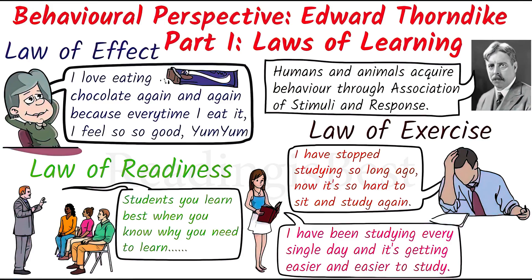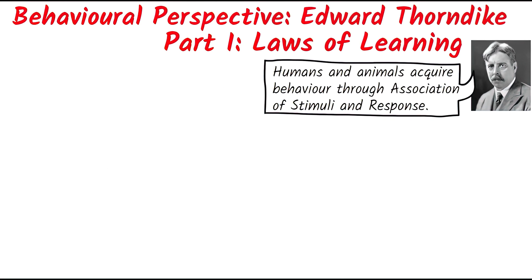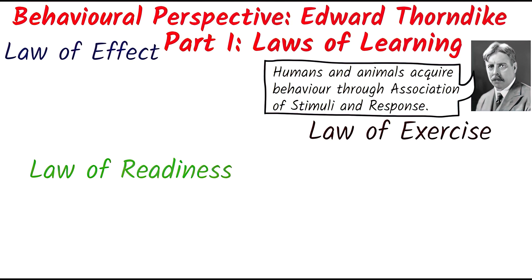Welcome to Reading is Best channel. In this video I am going to talk about Edward Thorndike and his three major laws of learning. Edward Thorndike initially proposed that humans and animals acquire behaviors through the association of stimuli and responses. He advanced his laws of learning to explain why behaviors occur the way they do. Here I will talk about his three major laws of learning.